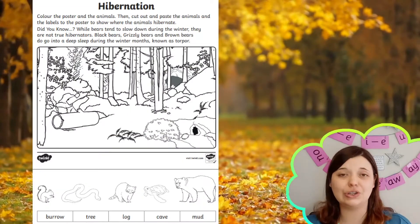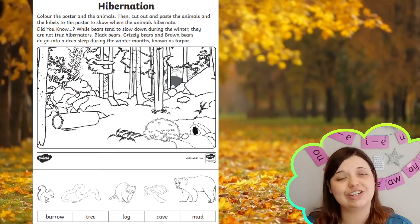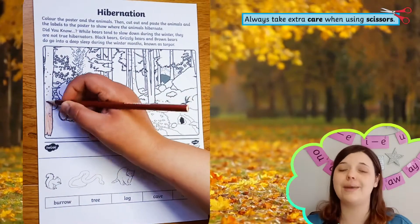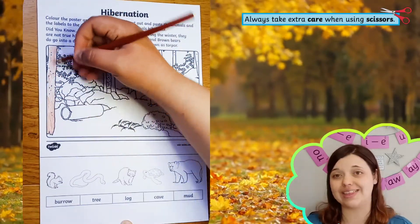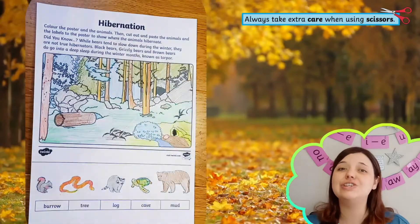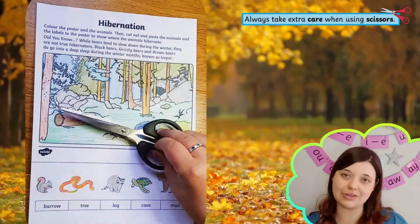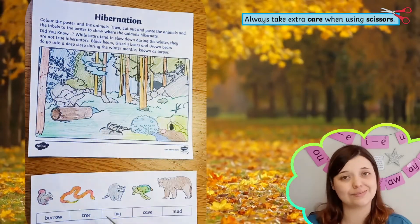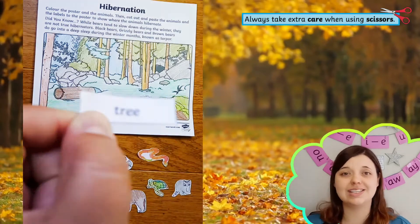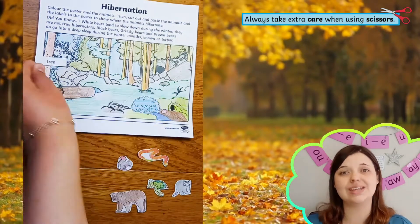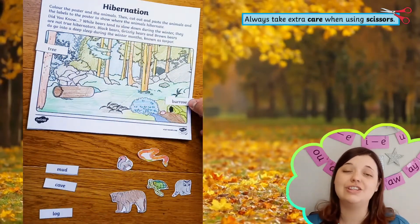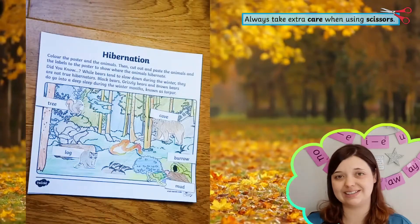This hibernation cut and colour worksheet can help you teach your learners to compare how different animals live throughout the seasons. Ask children to colour the poster and the animals, then challenge them to cut out and stick the animals and the labels to the poster to show where the animals hibernate.